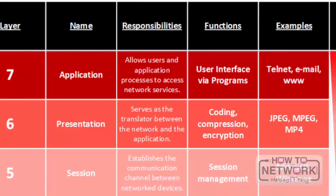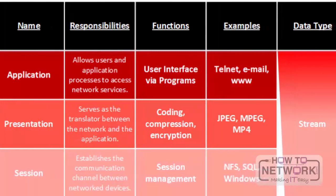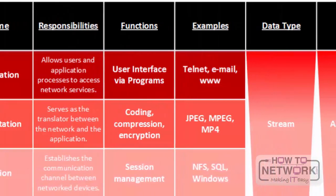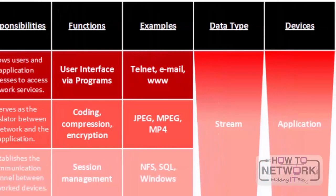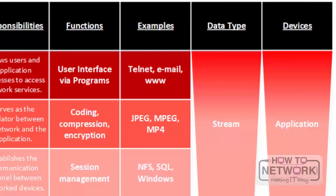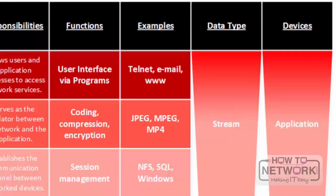Looking at the examples for each of these layers, they should look very familiar. Examples of applications that run at layer 7 are Telnet, email, or a web browser. The presentation layer examples include file types such as JPEG, MPEG, or MP4 — these serve as compression types or ways data is handled. The session layer examples include SQL communications or Windows operating system communications.